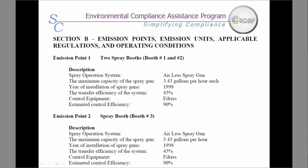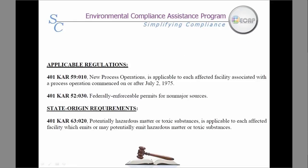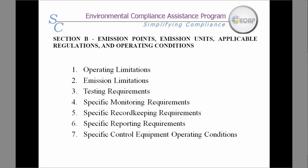Section B labels each emission point or emission unit, provides a description, and will indicate rated capacities and control equipment and efficiencies. If you have several emission points that are similar, they may have group requirements instead of being listed for each point. For all emission points, the applicable regulations are referenced. Applicable regulations are the basis for your air permit and will determine monitoring, record keeping, and reporting.